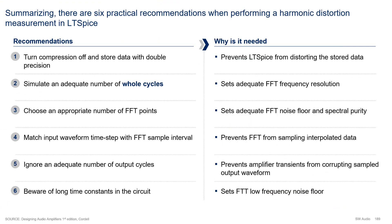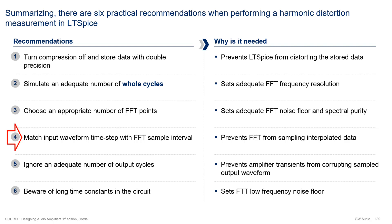As a summary, here are six practical recommendations for distortion measurement in LTSpice. First, turn off compression and store data in double precision. Second, simulate an adequate number of whole cycles to set adequate FFT frequency resolution. Third, choose an appropriate number of FFT points to set an adequate noise floor and spectral purity. Fourth, match the input waveform time step to the FFT sample interval to prevent sampling of interpolated data. Fifth, ignore an adequate number of output cycles to prevent amplifier transients from corrupting the output waveform. And sixth, beware of long time constants in the circuit, as these set the FFT low-frequency noise floor.